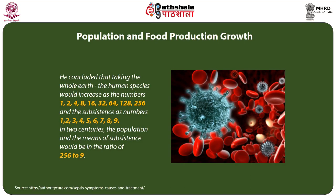Malthus concluded that, taking the whole earth, the human species would increase as the numbers 1, 2, 4, 8, 16, 32, 64, 128, 256 — a geometrical progression — while subsistence would increase as 1, 2, 3, 4, 5, 6, 7, 8, 9 — an arithmetic progression. In two centuries, the population and the means of subsistence would be in the ratio of 256 to 9.